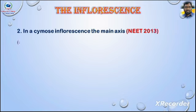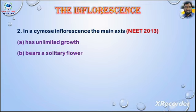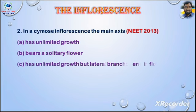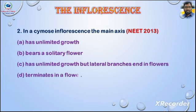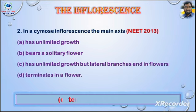Question number two: in a cymose inflorescence, the main axis — asked in NEET 2013. Options are: a) has unlimited growth, b) bears a solitary flower, c) has unlimited growth but lateral branches end in flowers, d) terminates in a flower. Answer is option d) terminates in a flower.